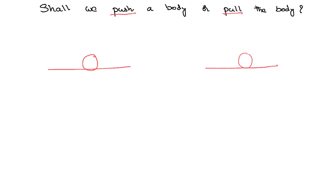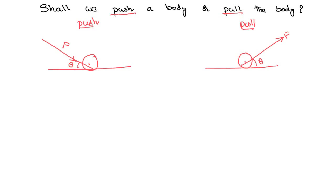Let us consider a point where the mass is concentrated, called a center of mass. We generally push bodies with a force by making an angle theta to the surface. Let us imagine the same kind of situation — let us pull the body with the same angle and the same force. Whenever you are trying to move the body, push or pull, the body is always moving in a forward direction.